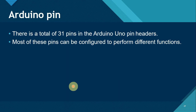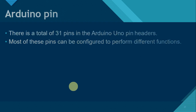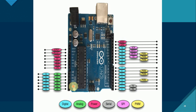Next, we have the Arduino pins. There is a total of 31 pins in the Arduino pin headers, and most of these pins can be configured to perform different functions. Based on the color code in the picture of the Arduino Uno R3, the categories are: digital, analog, power, serial (gray), SPI, and PWM.